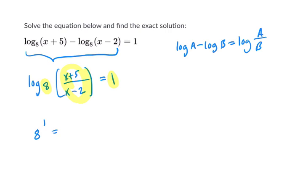8 to the first power equals x plus 5 over x minus 2. Then I would just multiply both sides by x minus 2. Let's see what happens.